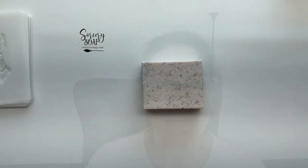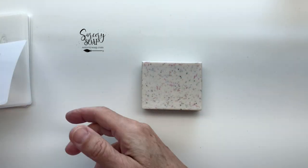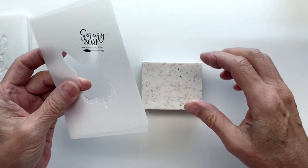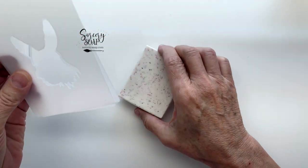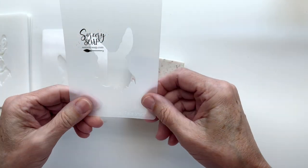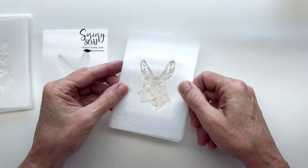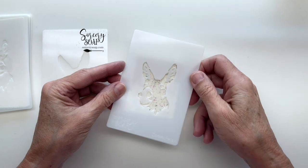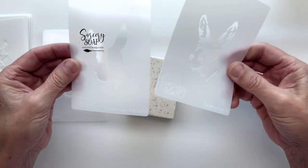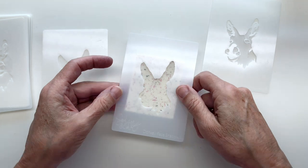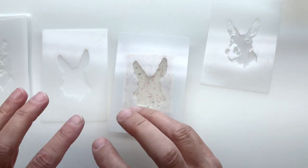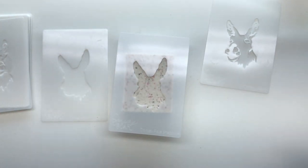Hi, this is Bea from Sorcery Soap, and today I wanted to talk to you about some soap ideas I had and show you a couple other things. Okay, here's my thought. Well, first of all, I'm going to show you, I'm going to do the donkeys. Donkeys, yeah, they'll fit. Okay, so donkey stencils.